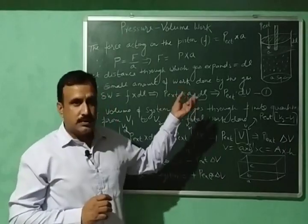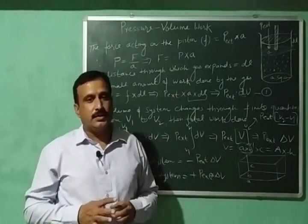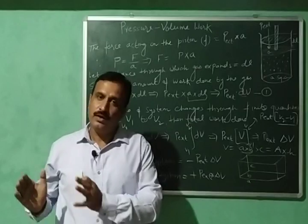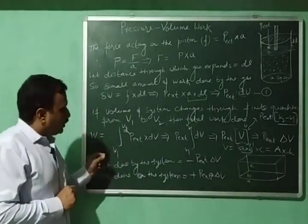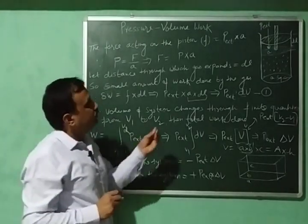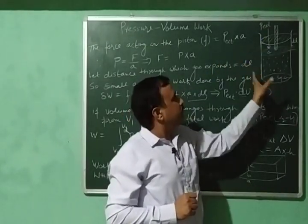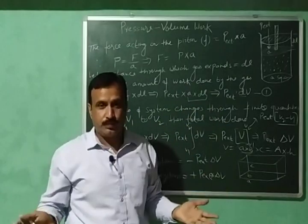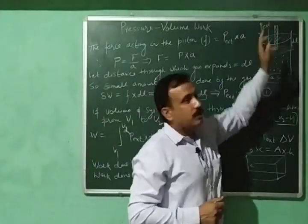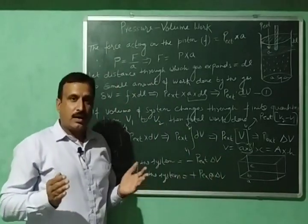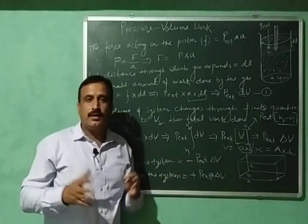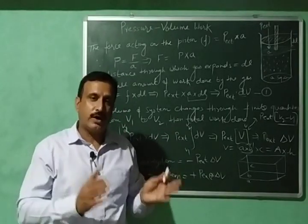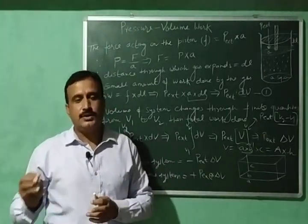The process taking place — whether expansion or compression — is an irreversible process, so we have calculated the work done for an irreversible process. If there is vacuum, meaning the cylinder is placed inside a container with no external pressure or gas, then P external equals zero. When P external equals zero, there is no work done. This means that when a gas is allowed to expand against vacuum or zero pressure, the work done is equal to zero.